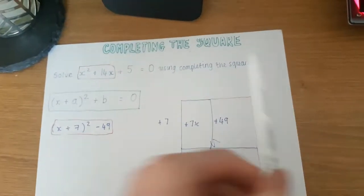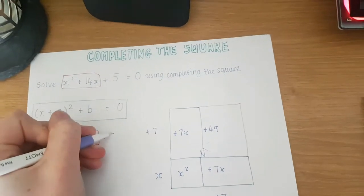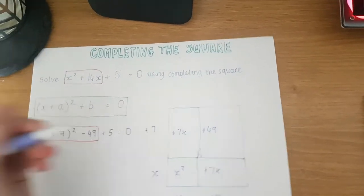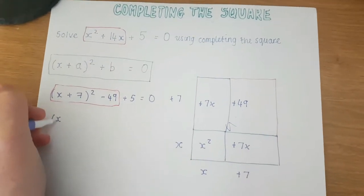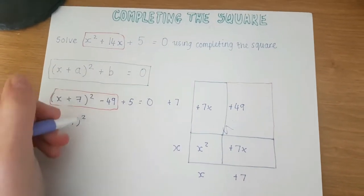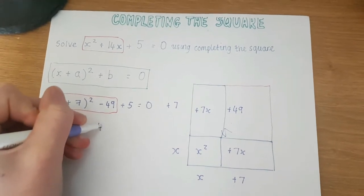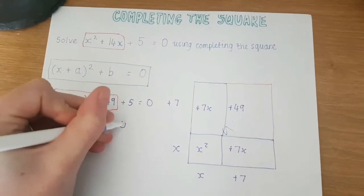Now I still have that +5 added onto that so I'm going to keep that there and that's equal to 0. From this step I can simplify so I'm going to keep my (x + 7)² the same. -49 + 5 is -44 and that is equal to 0.